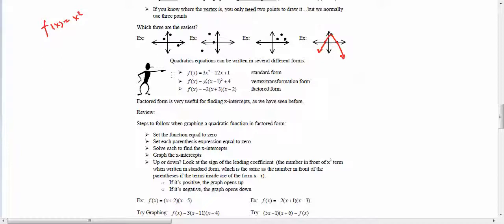It can take the standard form. We usually call that ax squared plus bx plus c, where you can see that a, b, and c are just numbers. In this particular case, we're talking about three, negative 12, and one.